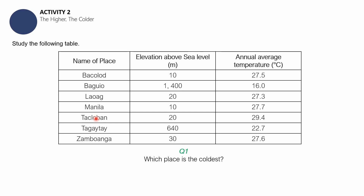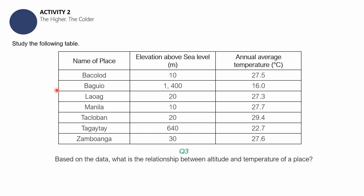If you need more time, you can always pause this video. Let's proceed with the second question: which place is considered the hottest? And the last question is: based on the data, what is the relationship between altitude and the temperature of a place? You may need some more time answering this question, so you can pause this video for the meantime. Okay, let's answer the questions for this activity.